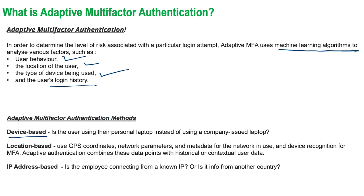One method is device verification — checking whether the user is using their personal laptop instead of a company-issued laptop, to determine if the device is trusted. If you are using a personal laptop inside the office, it will prompt you that the device is not trusted. Second is location verification — checking if the user is trying to access the system using a public network rather than the company's network, or if the user is in another time zone.